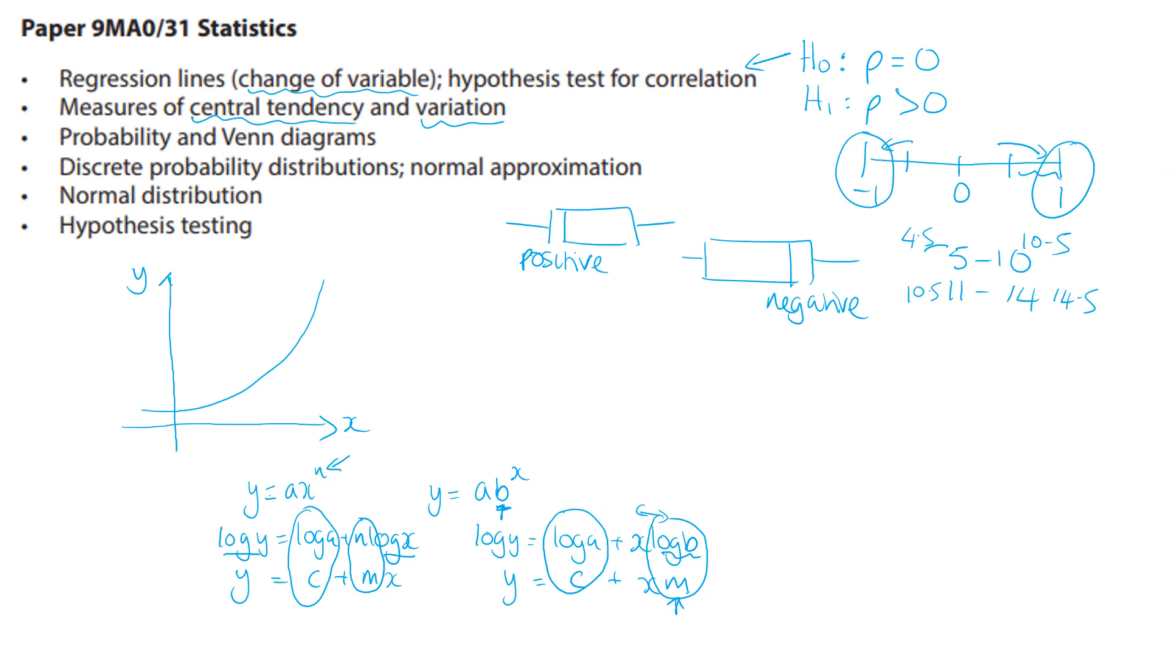Probability and Venn diagrams: so you need to remember your probability rules. So when you've got the probability of A union B, it's going to be the probability of A plus the probability of B minus the probability of the intersection. So if you think of a Venn diagram, when you do all of A plus all of B, you've added the intersection twice so you need to take it away.